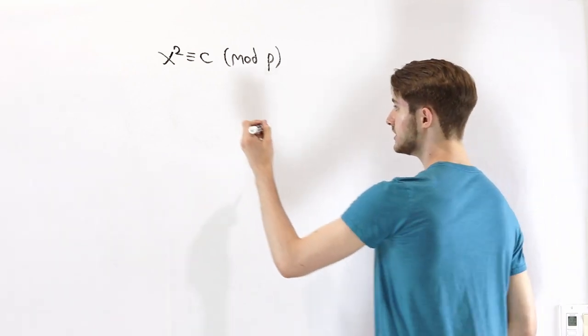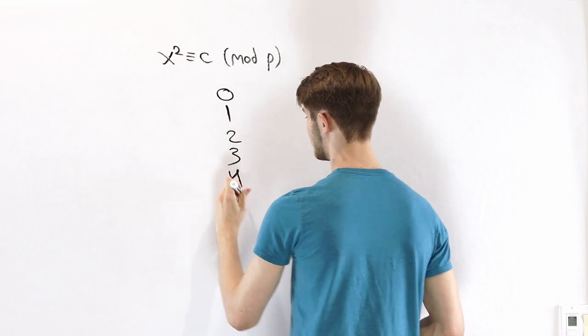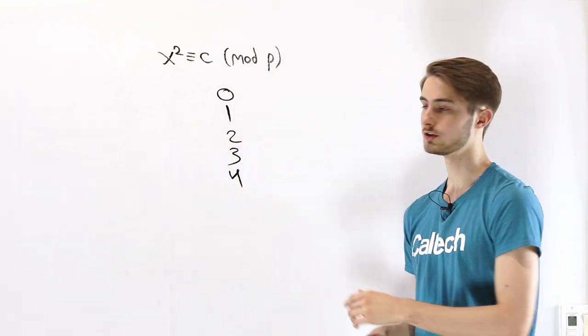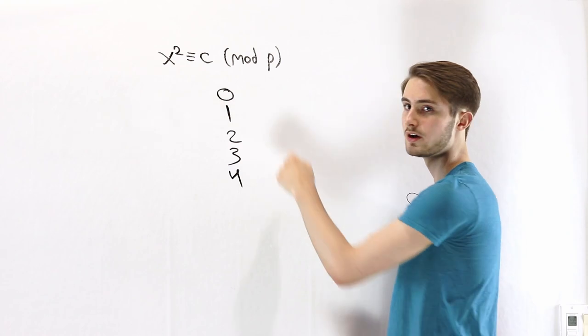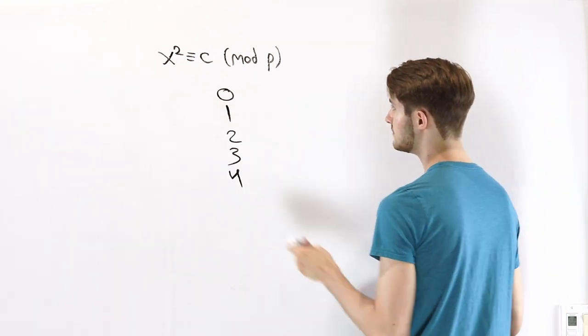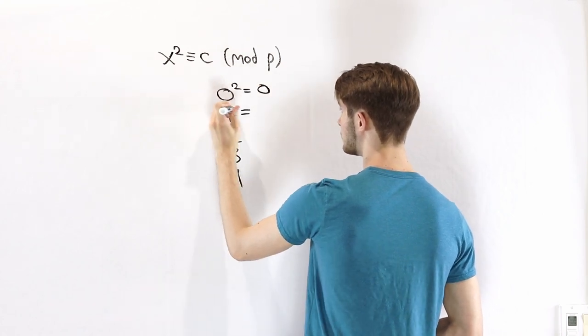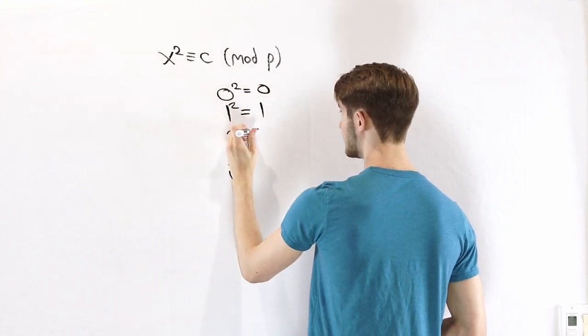The numbers that are unique mod 5 are 0, 1, 2, 3, and 4. Any number that's bigger than 4 is going to be congruent to one of these mod 5, so it's going to give the same results. If we square each of these, 0 squared is 0, 1 squared is 1, 2 squared is 4.